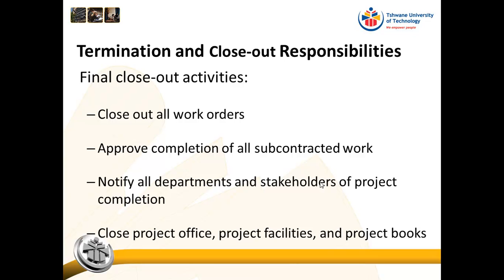If you have subcontracted work, you need to approve it and pay the subcontractors. Notify all departments and stakeholders of project completion — sometimes people continue booking on your project because their functional manager has not been told it is complete. If there is a project office or project facilities, you need to close those down. Your project books must be updated and all information filed, whether in physical or virtual files, available to other project managers as part of the organization's knowledge assets.